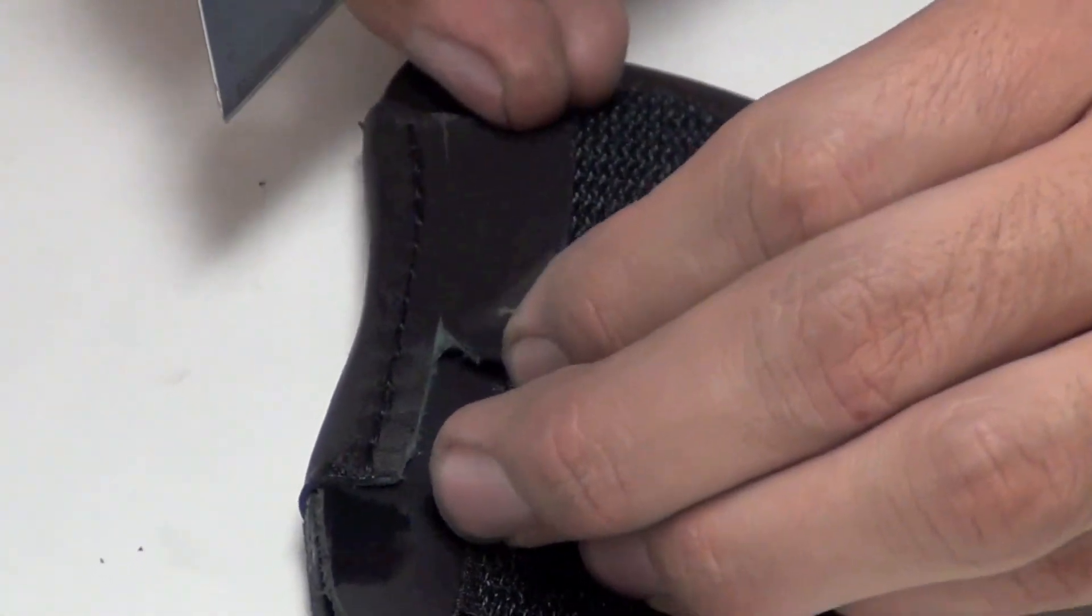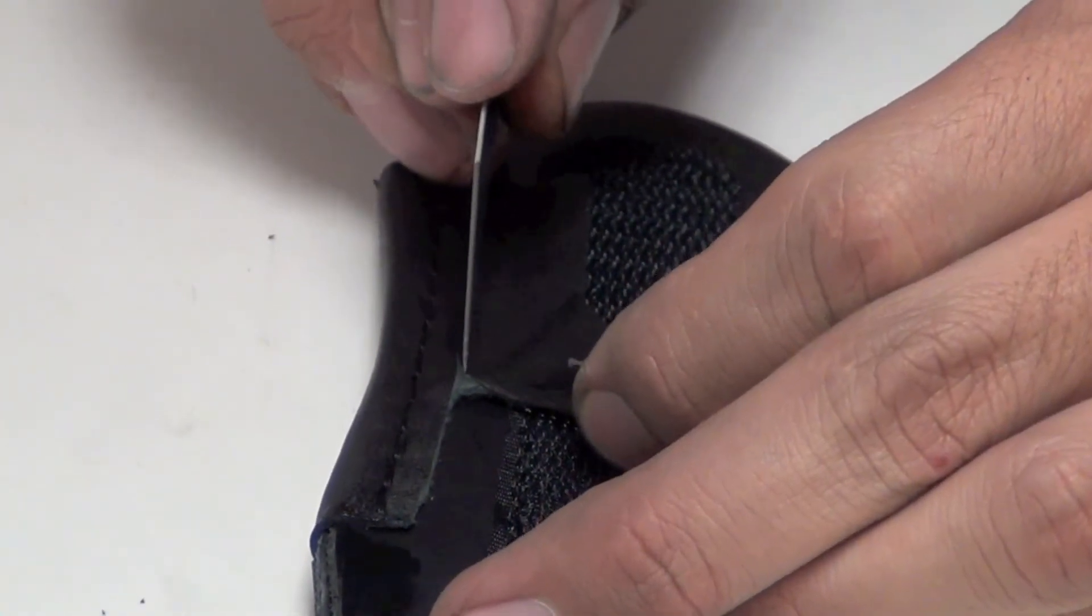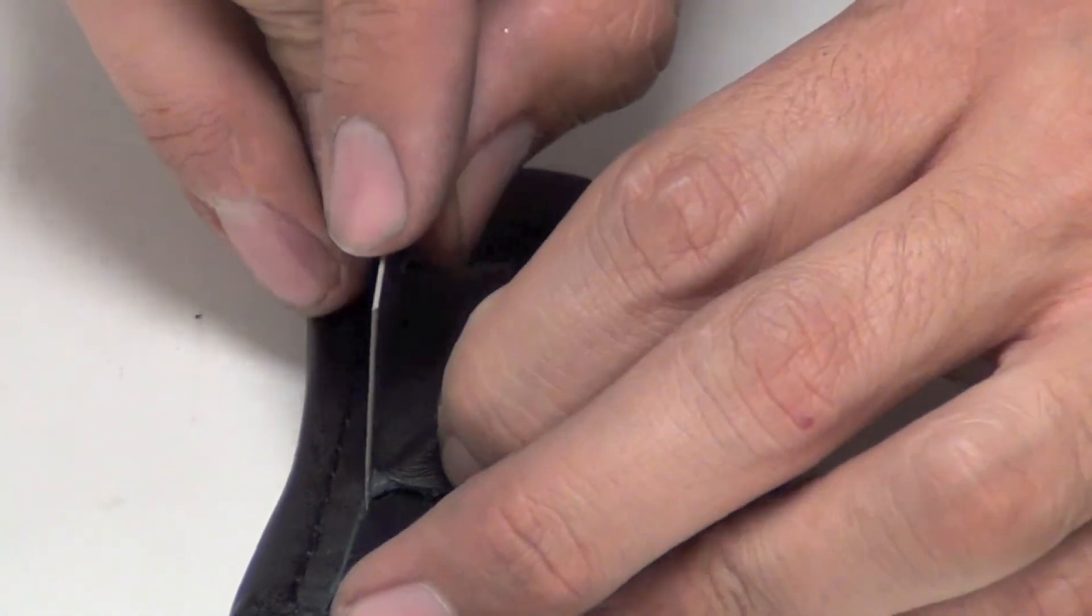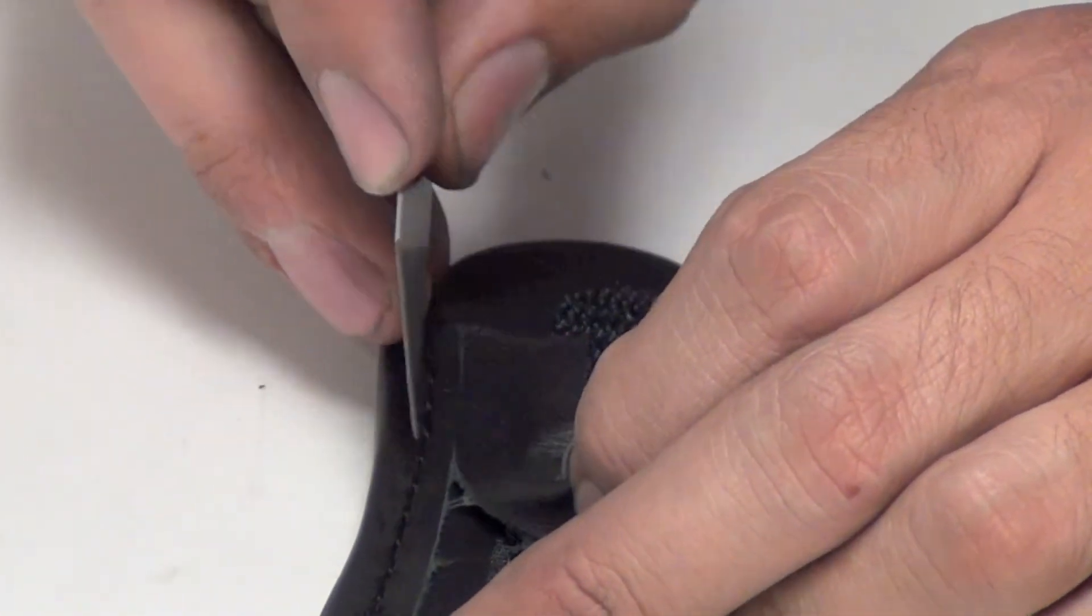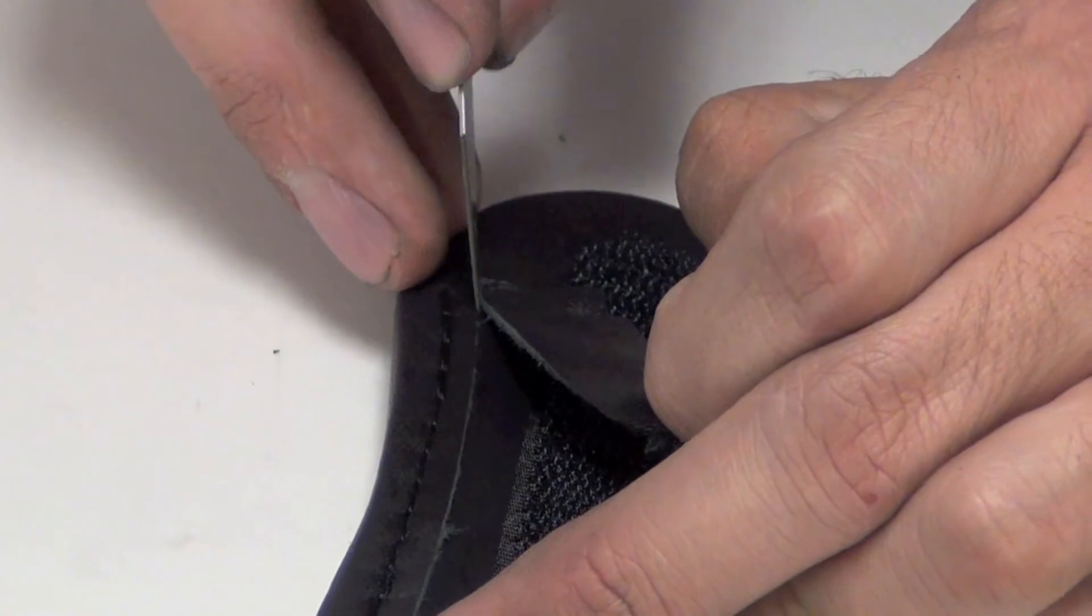And you can see that I just barely scored it, so I'm pulling on it and it's sort of tearing this apart. It's not actually a clean cut because I didn't cut all the way through. And that's good. Now I can just go back and do this and the leather underneath will barely even be scored.